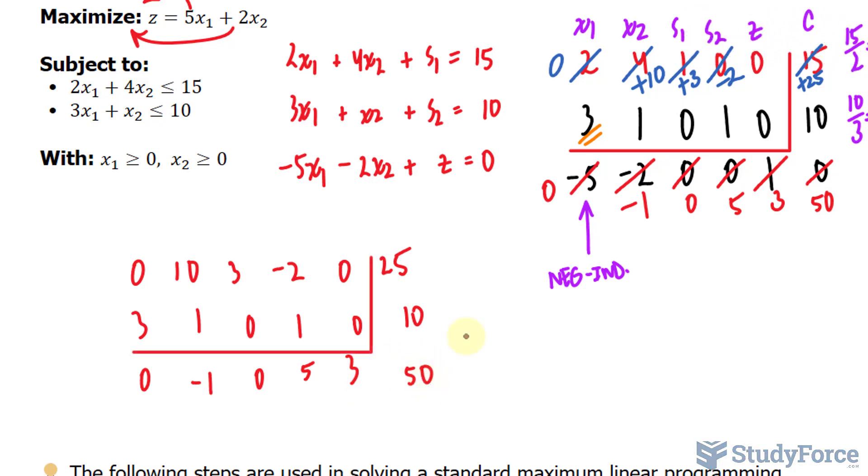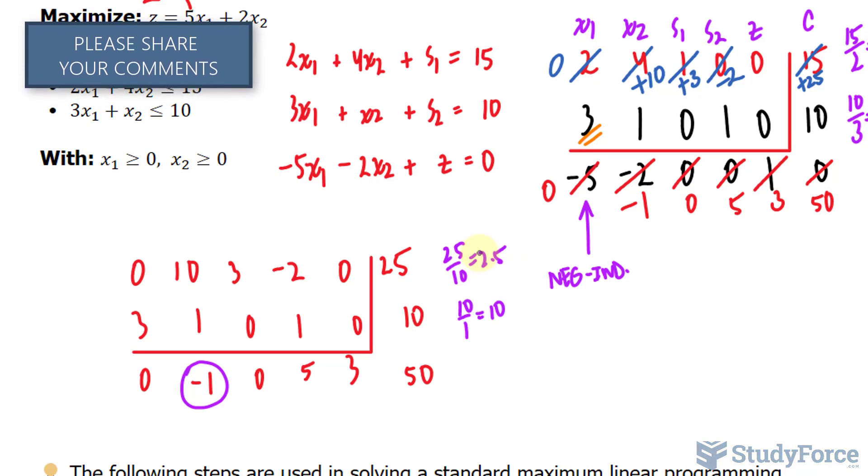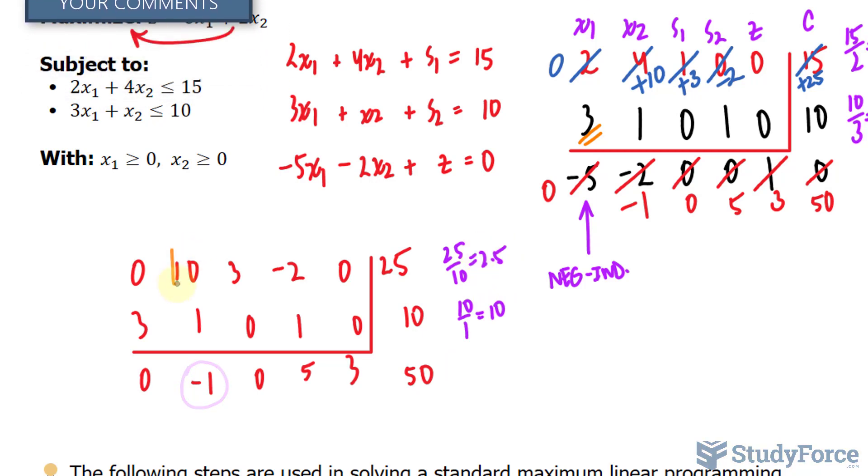Again, we will look for the most negative indicator. And negative 1 is the most negative number out of this whole row. Also, we'll divide 25 by 10. That's equal to 2.5. And 10 divided by 1 is equal to 10. Of these two numbers, 2.5 is the smallest. So, we will keep this 10 the way it is. 10 will be our pivot. And we will use this to make 1 and negative 1 into 0s.